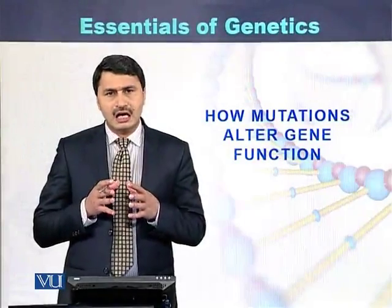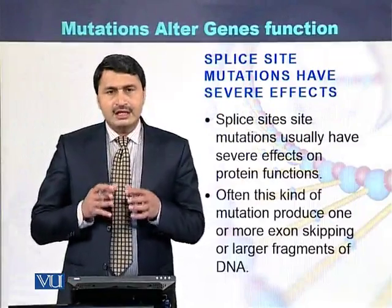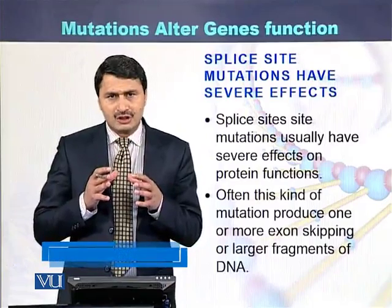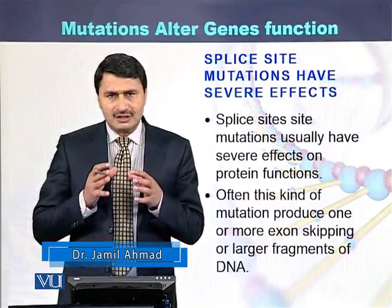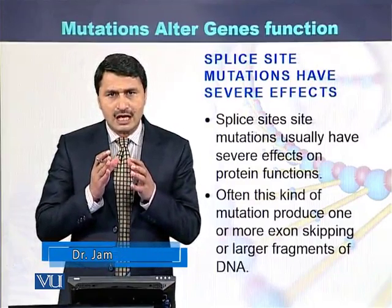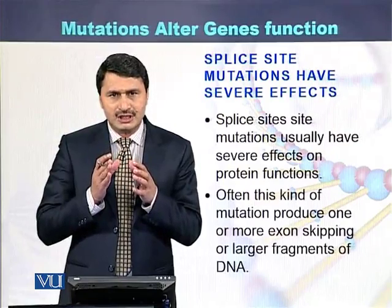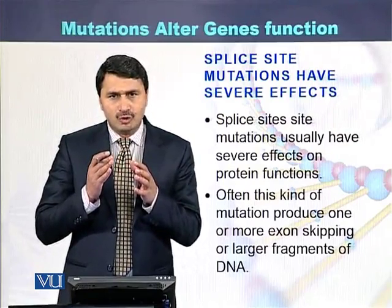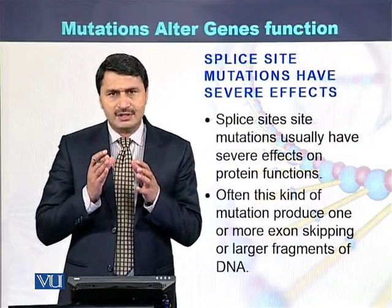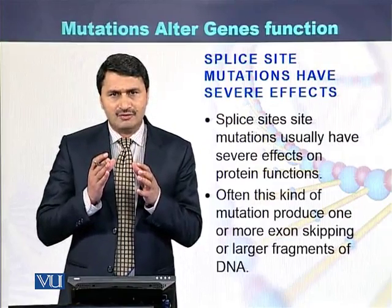How mutations alter gene function. Splice-site mutations usually have severe effects on the production of the protein because they are present at the boundaries of the exon and intron. Usually due to splice-site mutations, there is skipping of the exon, or more than one exon — sometimes larger fragments of the DNA are skipped due to such mutations.